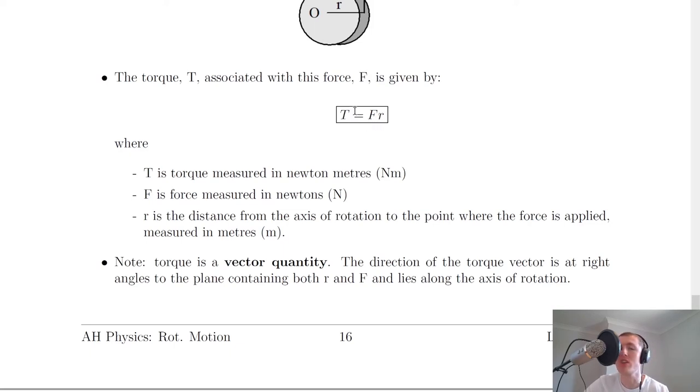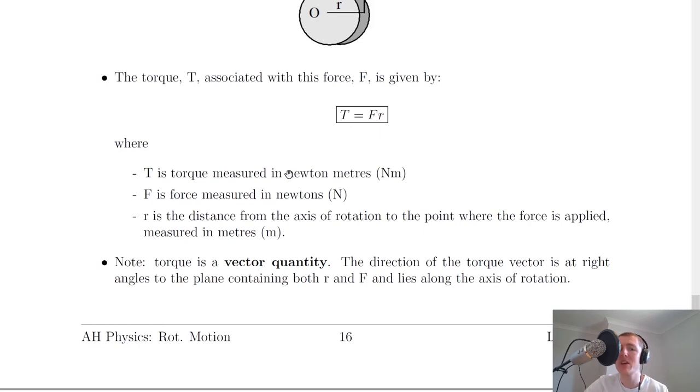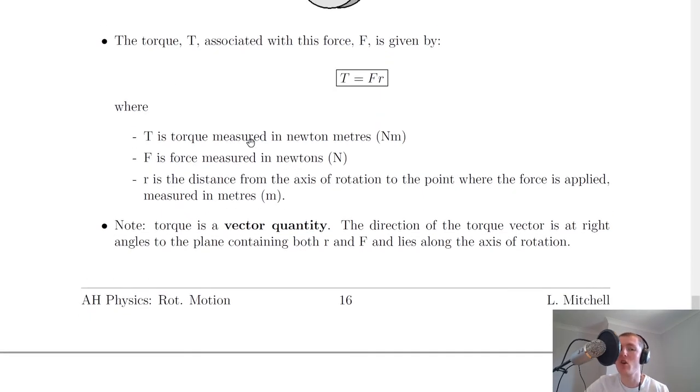This equation is on your relationship sheet in the exam. The symbols and units are: T is the torque measured in newton metres, F is the force measured in newtons, and R is the distance from the axis of rotation to the point where the force is applied, measured in metres.